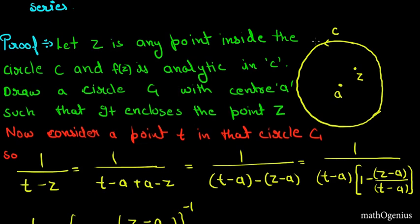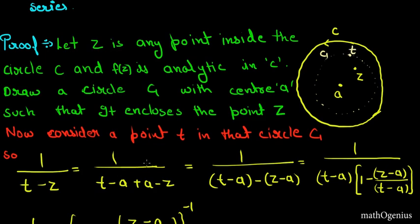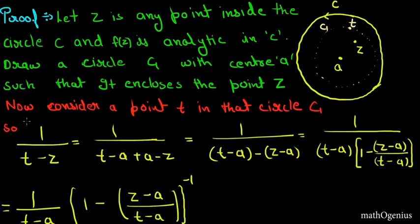We will do some construction to prove this. We will make a circle C₁ with center a, so C and C₁ are concentric circles, and C₁ encloses the point z. Let the points on circle C₁ be called t. Now we will evaluate the term 1/(t−z), because this term will take us to the Cauchy integral formula.